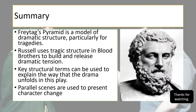To summarize, we've looked at how Freytag's pyramid is a model for dramatic structure, particularly for tragedies. We've also looked at how that model of tragic structure can be applied to Blood Brothers in a way that shows how the play builds and releases tension. We've covered a number of key structural terms which you can use effectively in essay writing to explain the way drama unfolds in this play or any other play you might be studying. We've also looked at the idea of parallel scenes and the way they can be used importantly to present character change.